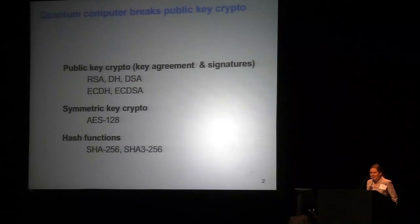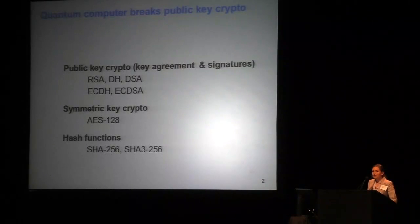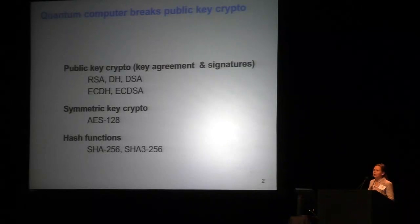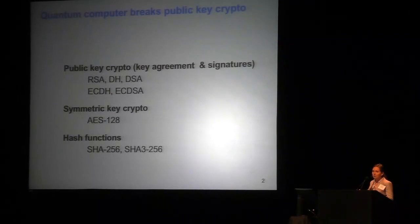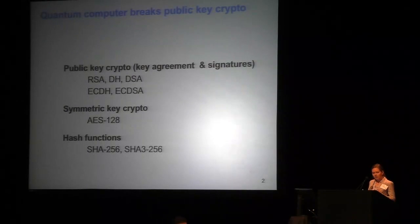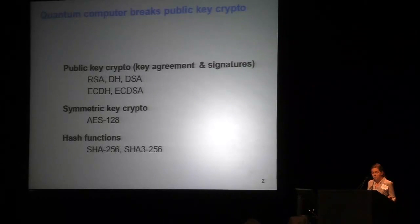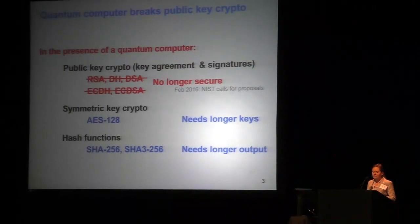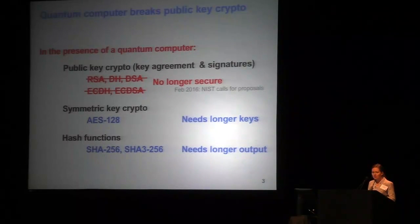We will focus here on protecting currently deployed and widely used cryptography against quantum computers. The main crypto primitives used in TLS are public key cryptography including key agreements and signatures — examples being RSA, Diffie-Hellman, and elliptic curve based analogs. There is also symmetric encryption like AES-128 and hash functions like SHA-256 and SHA-3. Unfortunately, quantum computers can break currently used public key crypto — there are efficient quantum algorithms that can break RSA, Diffie-Hellman, and their family.